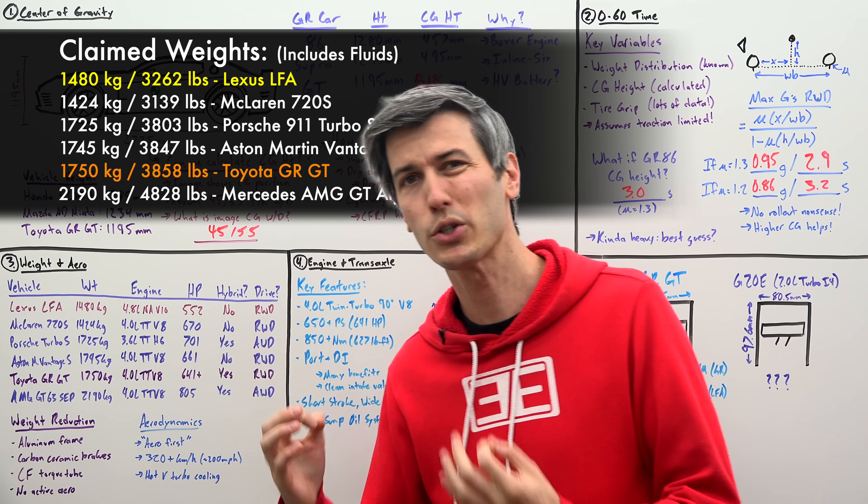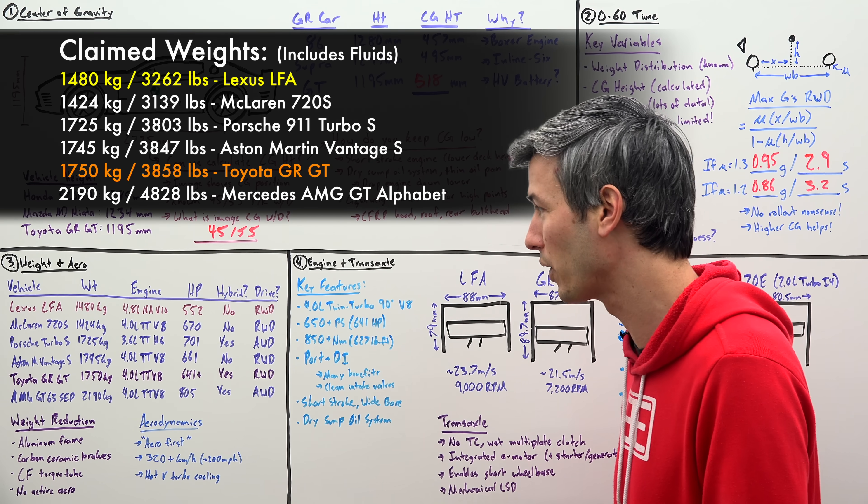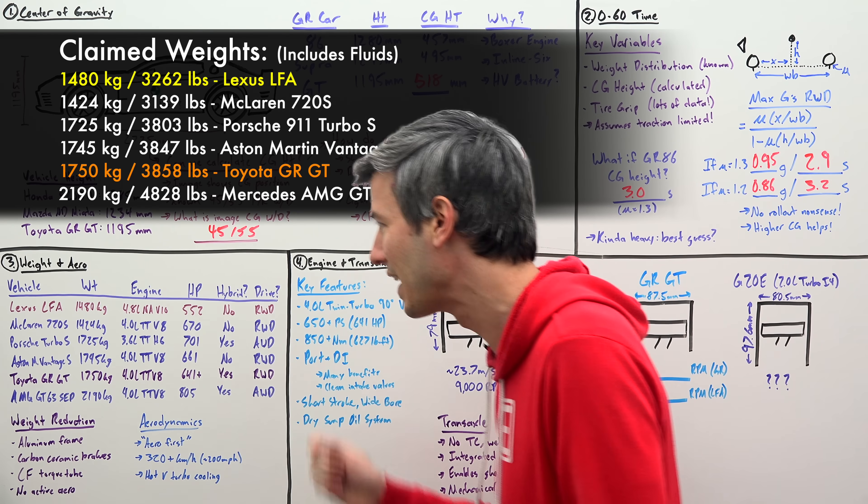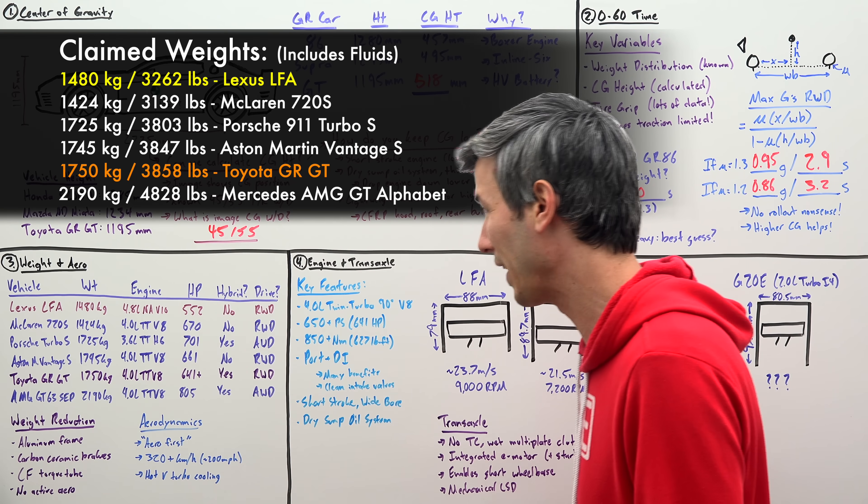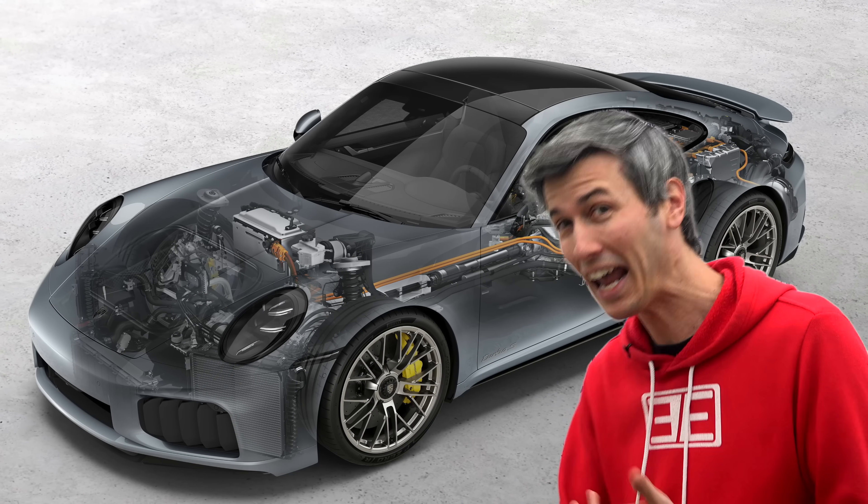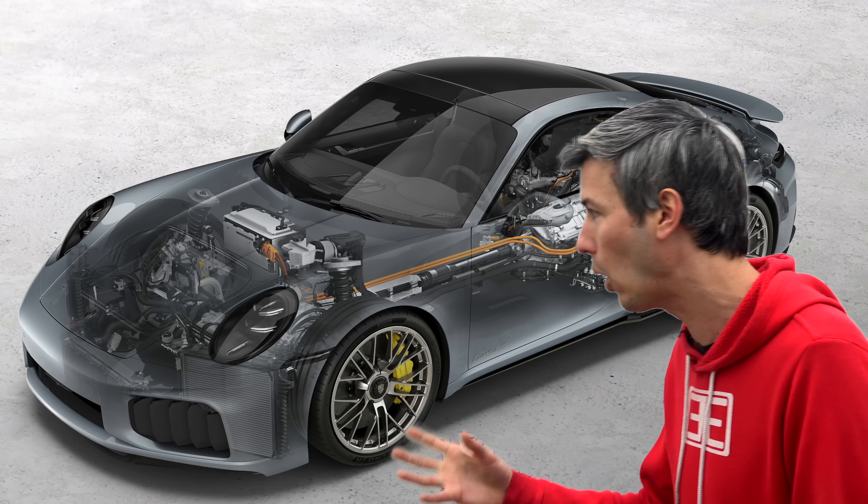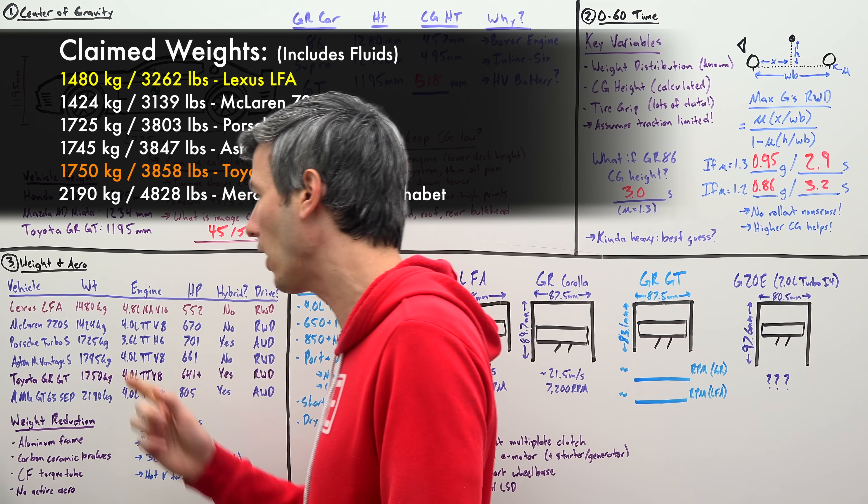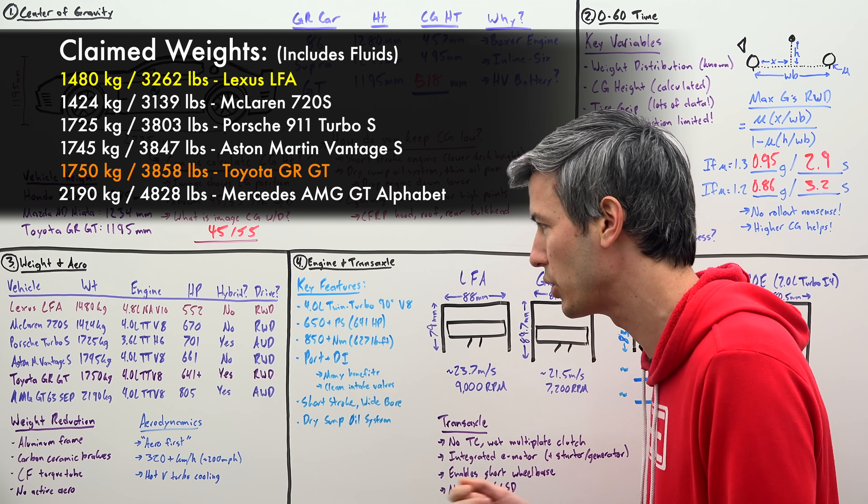But here's one, Porsche Turbo S. This is a vehicle that weighs very similarly 25 kilograms less than the GR GT, though it has more power, it has a powerful hybrid system, and it has all-wheel drive. So all of that and still coming in under the weight of Toyota's claim for the GR GT.